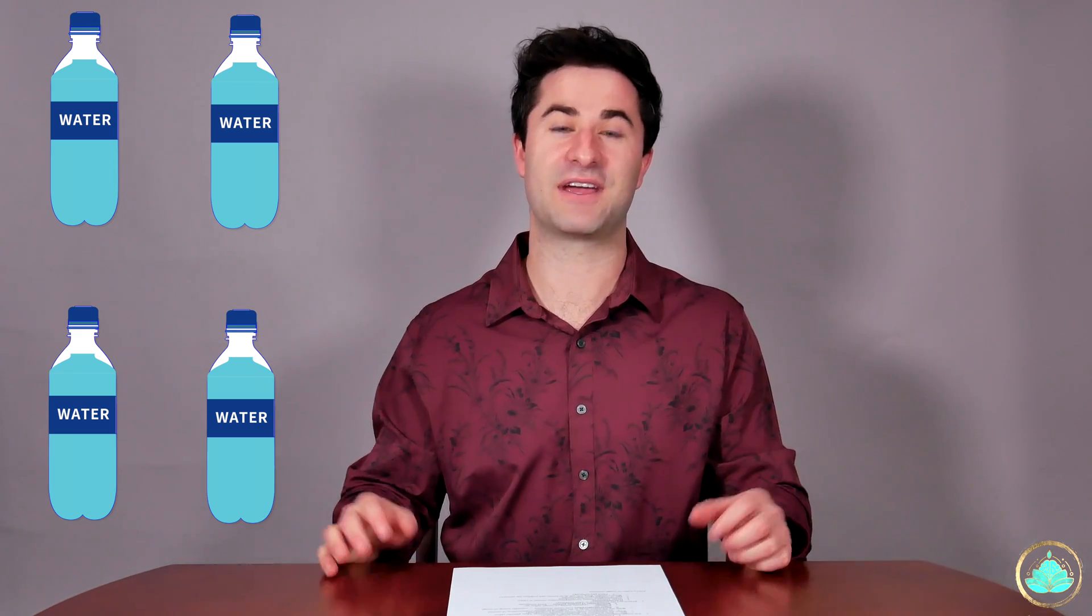With acute bronchitis, you're likely to have a cough. And sometimes you cough up a bunch of gunk and we call that a productive cough and other times you just have a dry cough where not a lot of stuff like phlegm is coming up and we call that a non-productive cough.